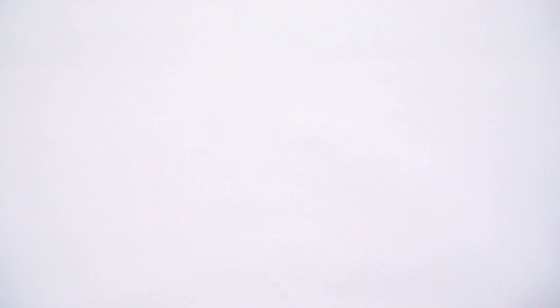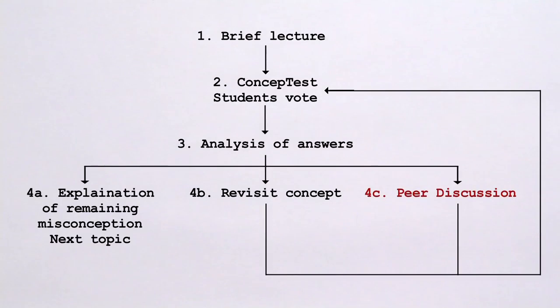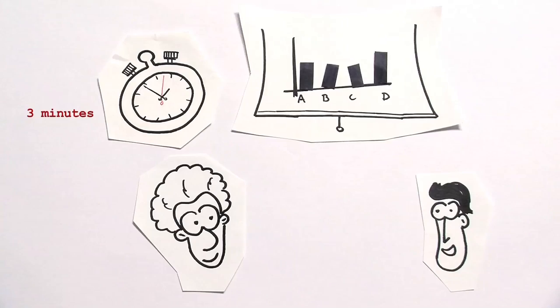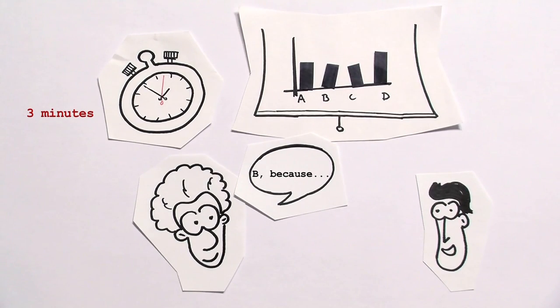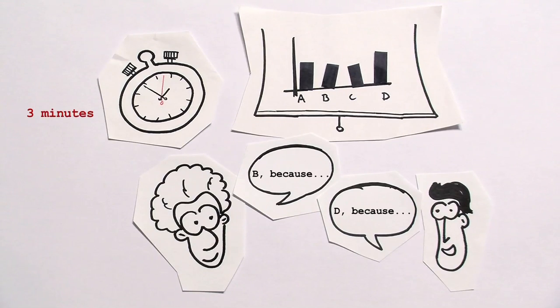In the third scenario, where there is a mix of correct and incorrect answers, Professor Brown can introduce so-called peer discussions. This involves students mutually discussing their answers and exchanging the rationale for the solutions, which gives them once more the opportunity to engage with the taught content more intensively.